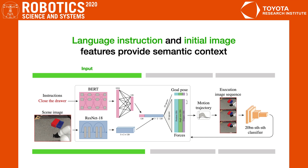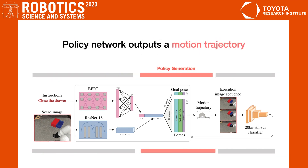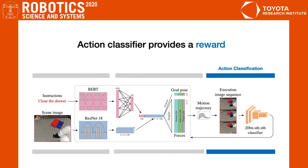The learning from demonstration pipeline works as follows. First, we send language instructions and scene images as input to our model, and concatenate their features to provide a semantic context. Then, a policy generation network outputs a motion trajectory specified as a goal pose and a series of forces to perturb the otherwise straight-line trajectory. Next, we execute the entire motion trajectory with the robot in simulation to get a video. This video is sent to the action classifier to get a score, which is used as a reward. We run a reinforcement learning algorithm to update the parameters of the motion trajectories to maximize the reward.